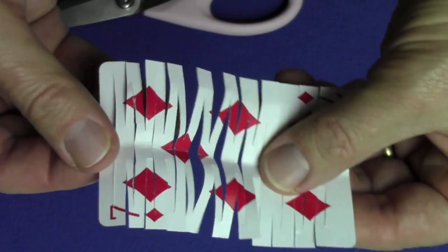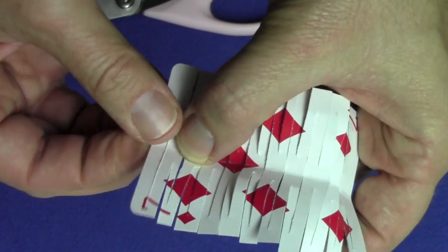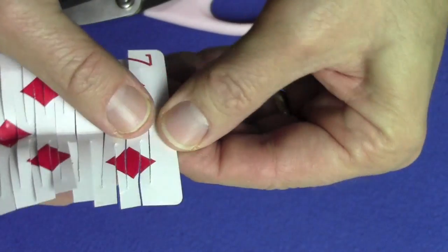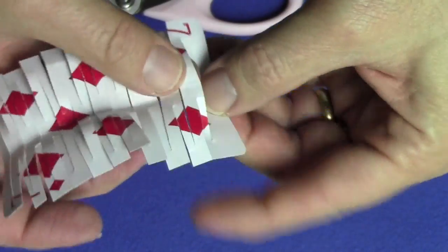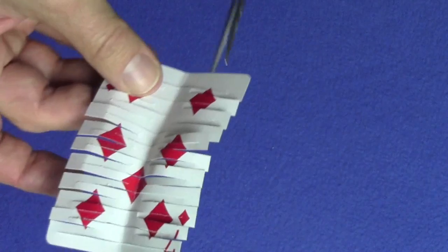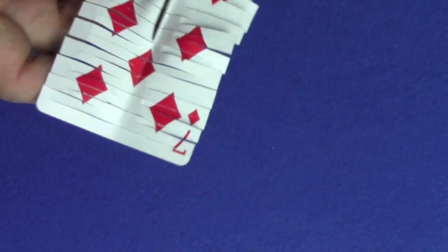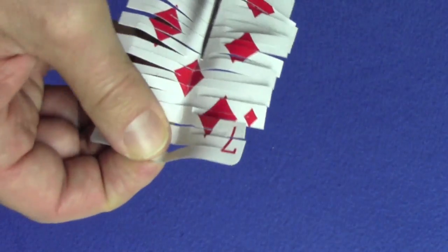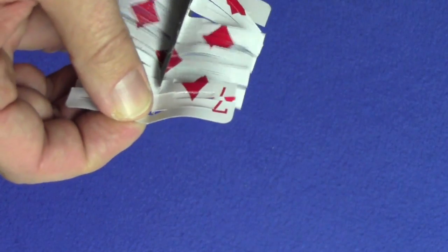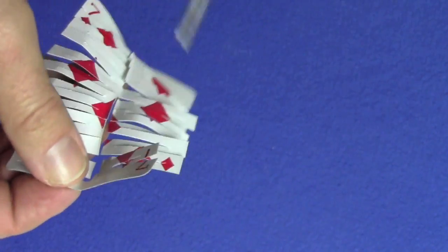Now what you want to do is cut from here right to here. Basically, make a cut that goes straight through, but you don't want to cut the very end. Cut straight through right to there.